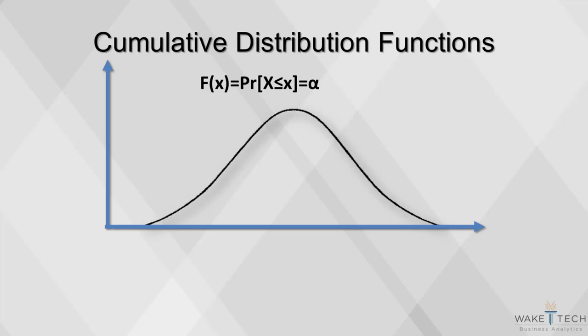The cumulative distribution function, or CDF, is the probability that the variable takes a value less than or equal to x. It is the total area under the normal curve up to x. Here's an example.